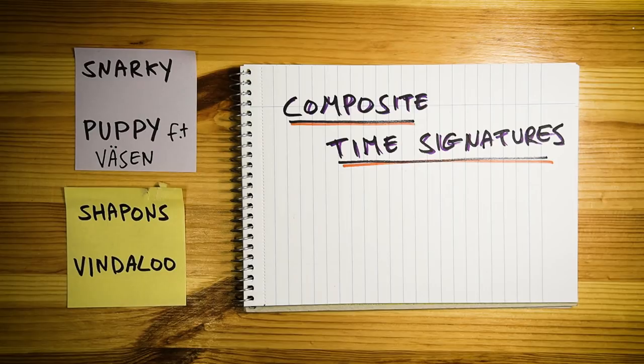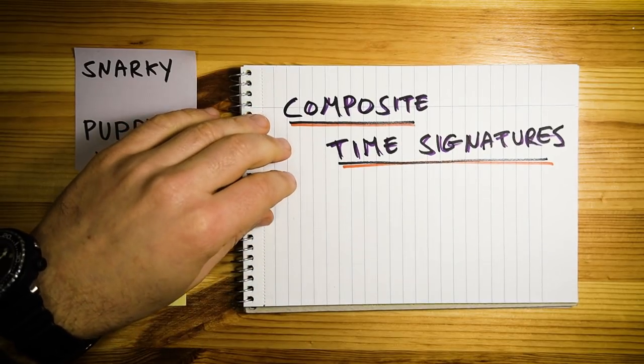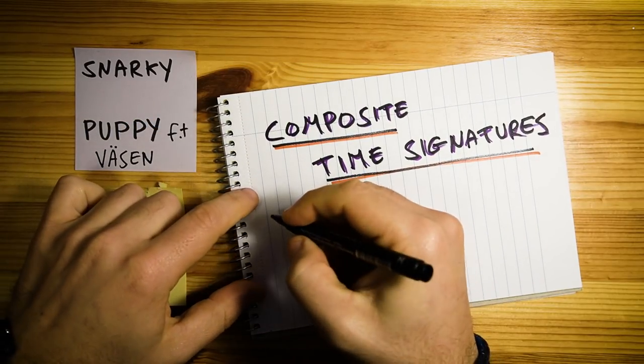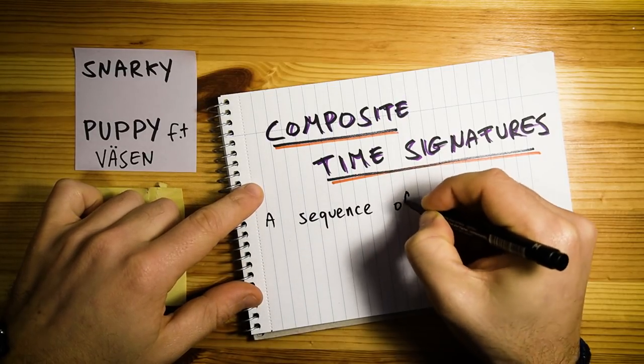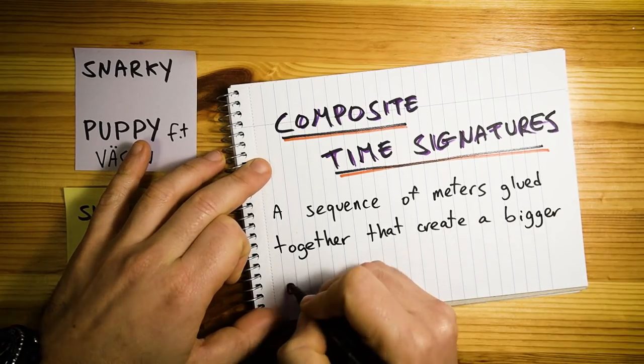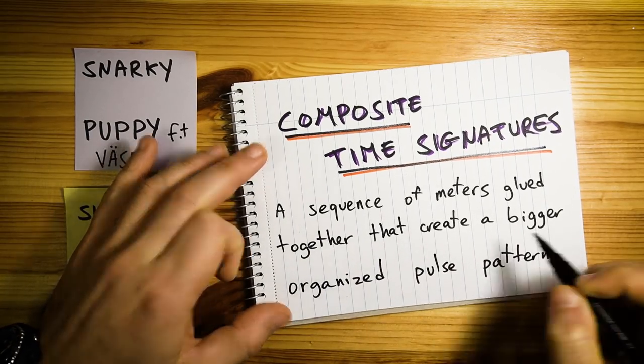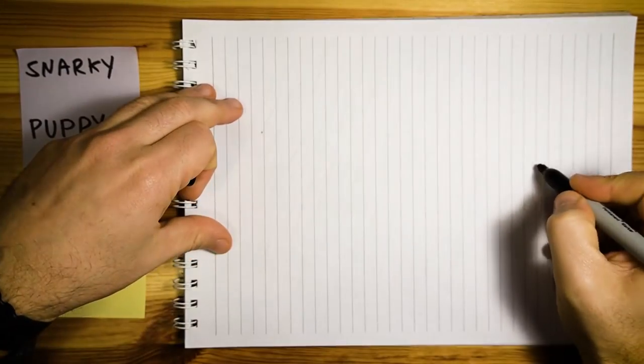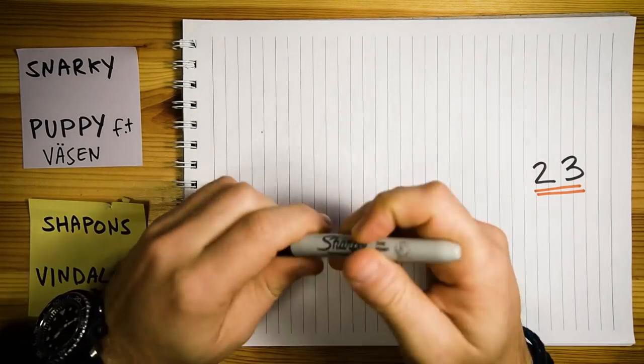This song has a very interesting rhythmic structure that is built over a composite time signature, which is a sequence of meters glued together that create a bigger organized pulse pattern. So the time signature for this song, while you can call it 23, is better described as 779.